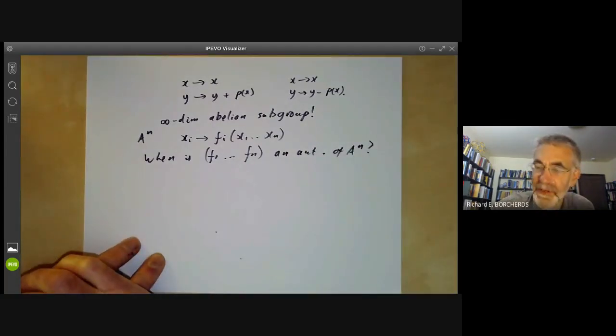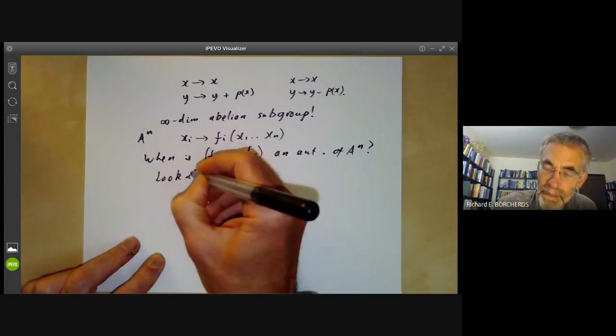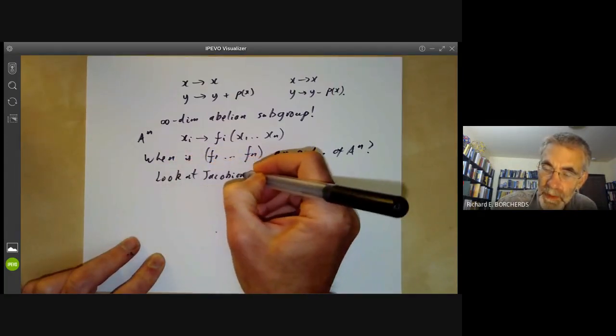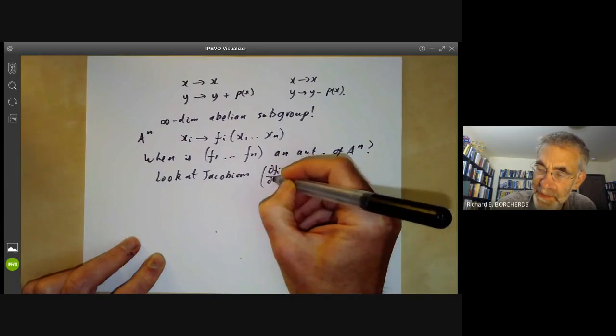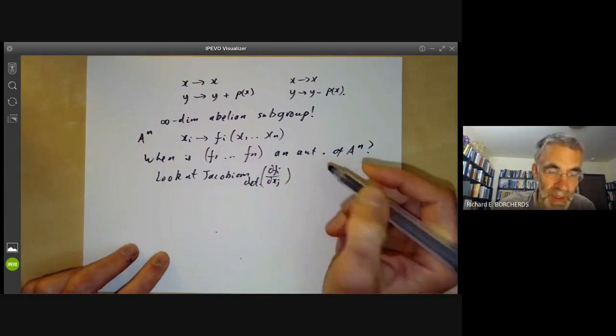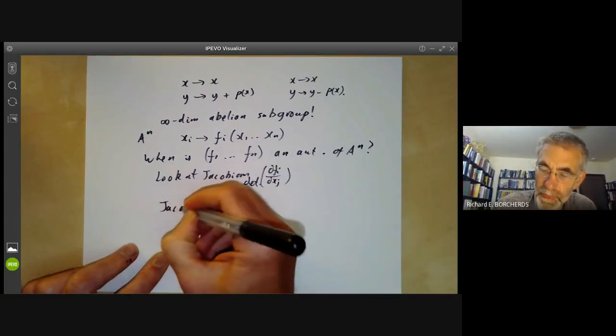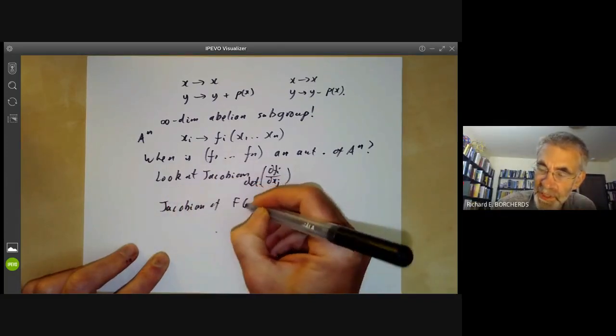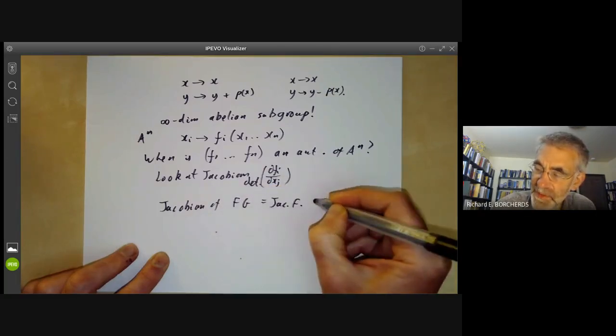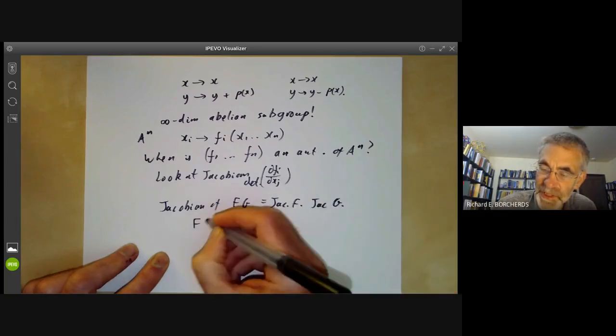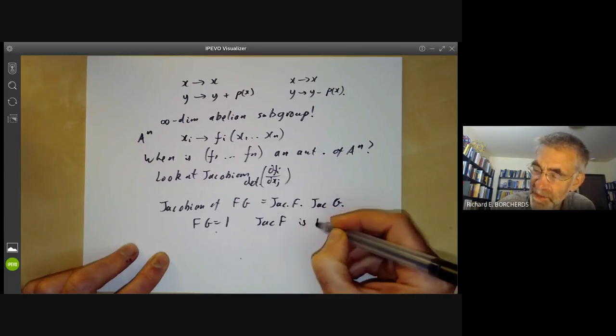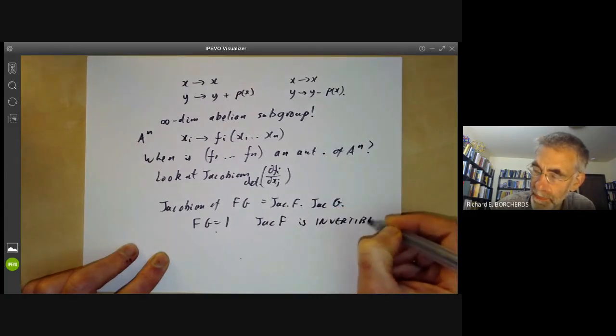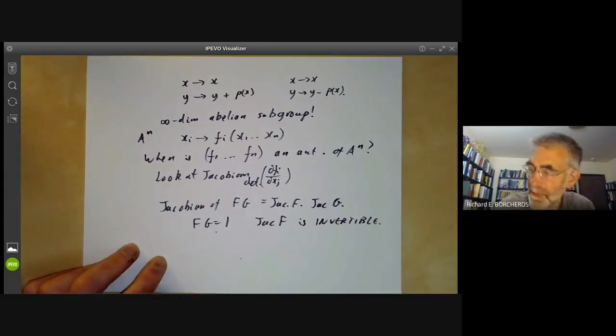Well, there's an obvious necessary condition. We can look at the Jacobian, which is this matrix of elements ∂fᵢ/∂xⱼ, and we can take the determinant of this. Now, the Jacobian of f composed with g equals the Jacobian of f times the Jacobian of g. So if f times g equals one, then the Jacobian of f is invertible as a matrix with entries in polynomials.